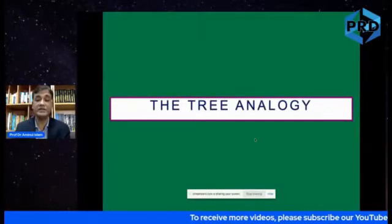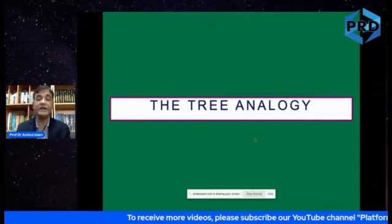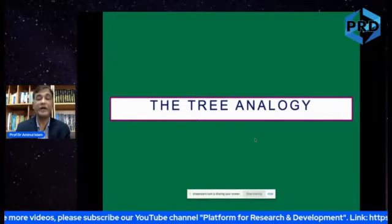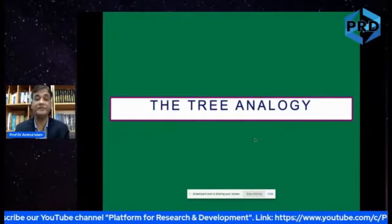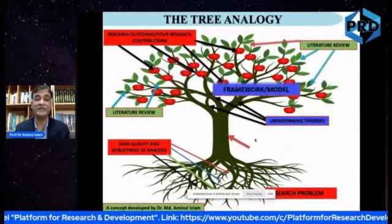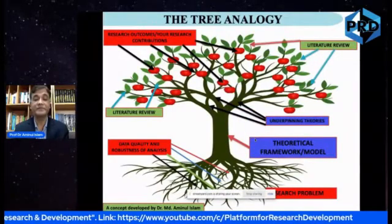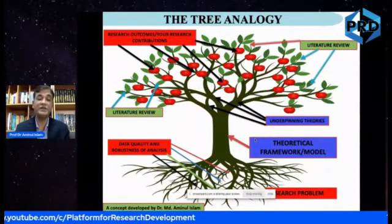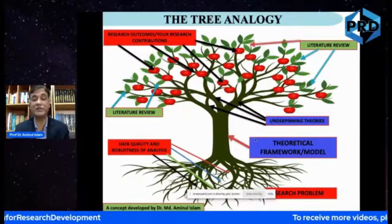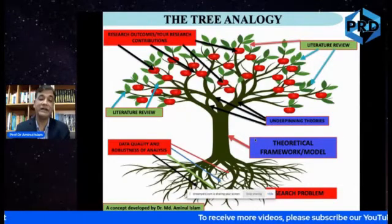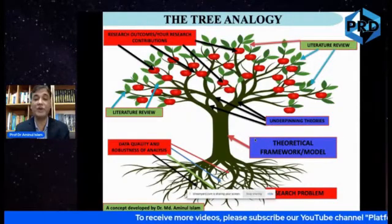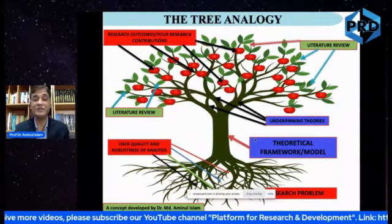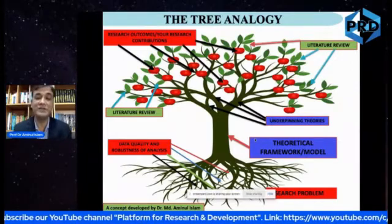Let me go through the tree analogy — this is something I came up with, comparing research with a tree. A tree consists of many things. If the roots are very strong but the body is not strong, the tree will not stand. If the body is very strong but the roots are weak, the tree again will not stand. And if the roots and body are both strong but there are no fruits, then there is no value of the tree.